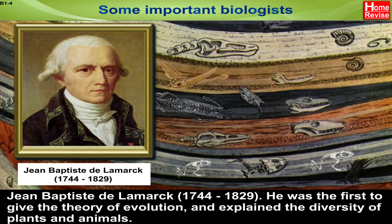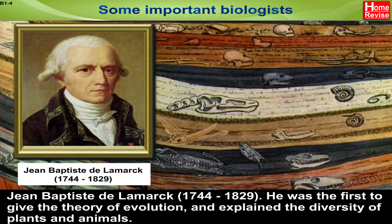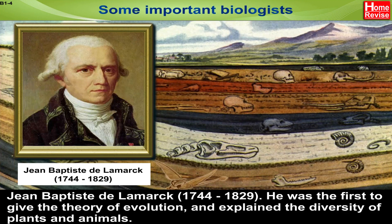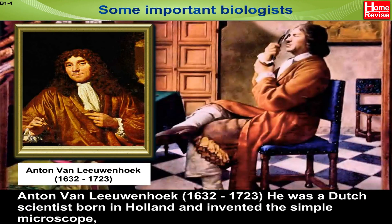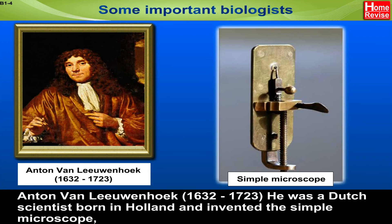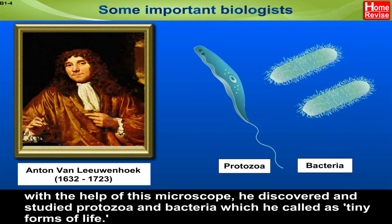Jean-Baptiste de Lamarck (1744–1829) was the first to give the theory of evolution and explain the diversity of plants and animals. He wrote a book also on this subject. Anton van Leeuwenhoek (1632–1723) was a Dutch scientist born in Holland and invented the simple microscope. With the help of this microscope, he discovered and studied protozoa and bacteria, which he called tiny forms of life.